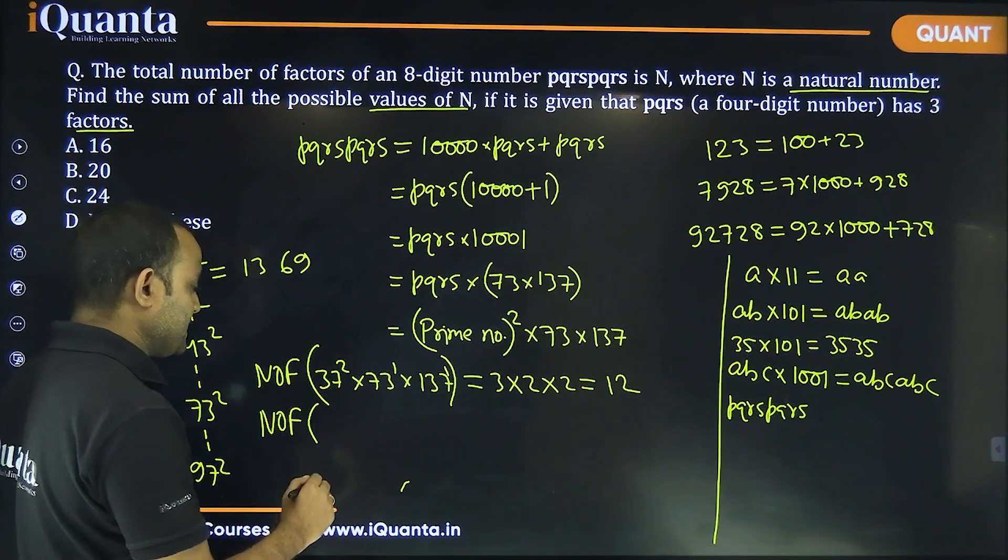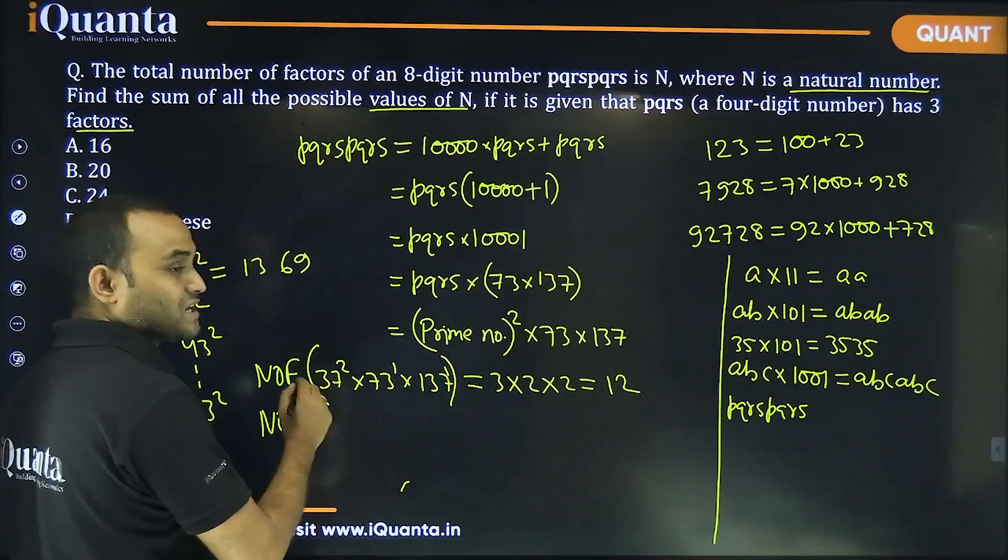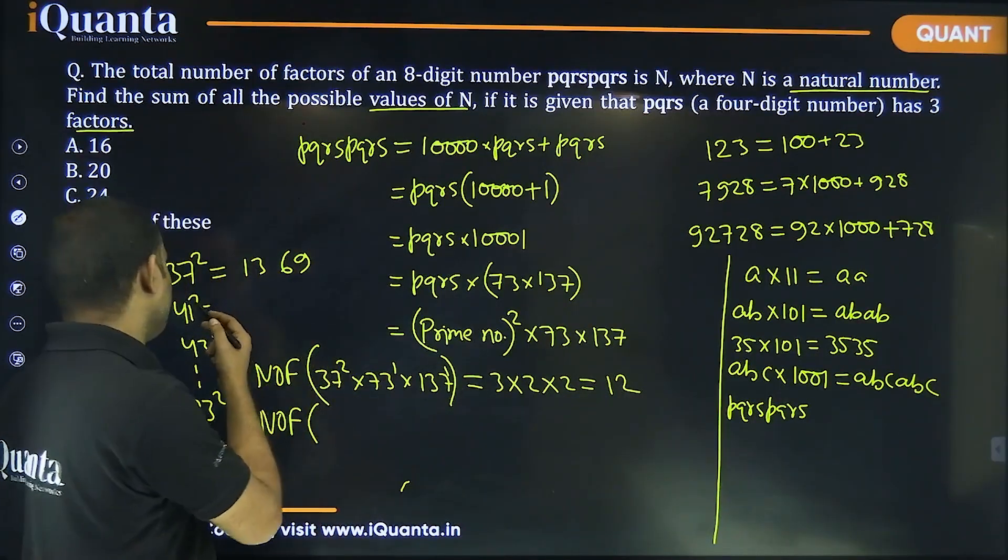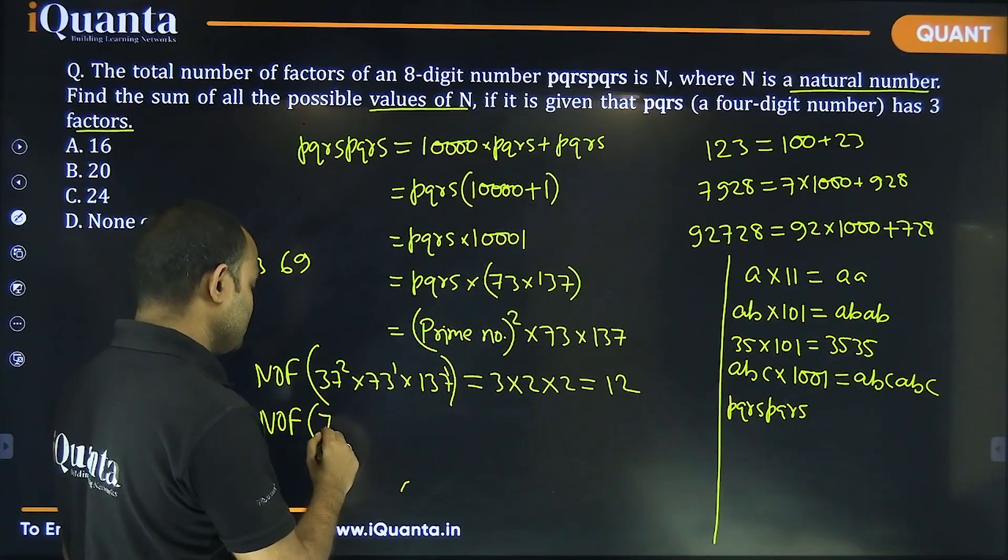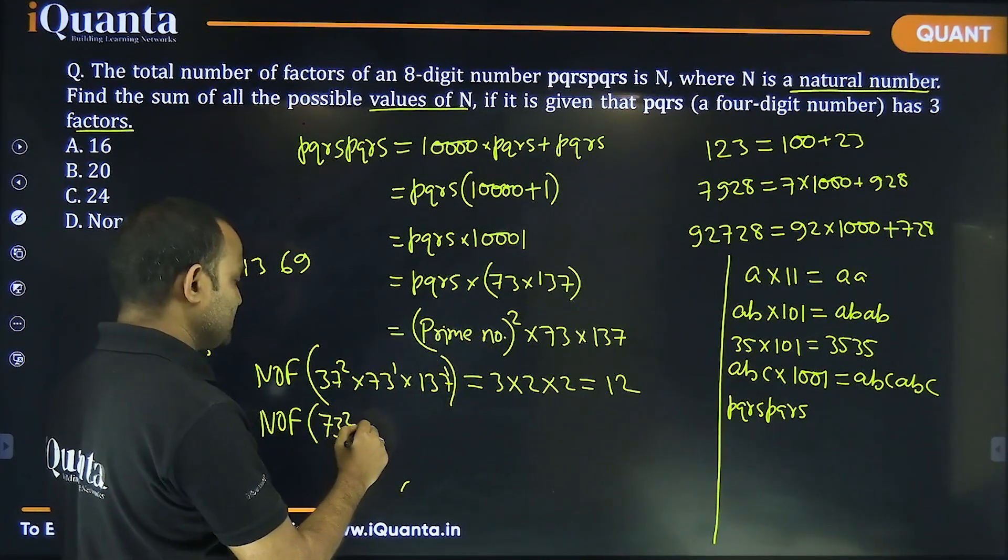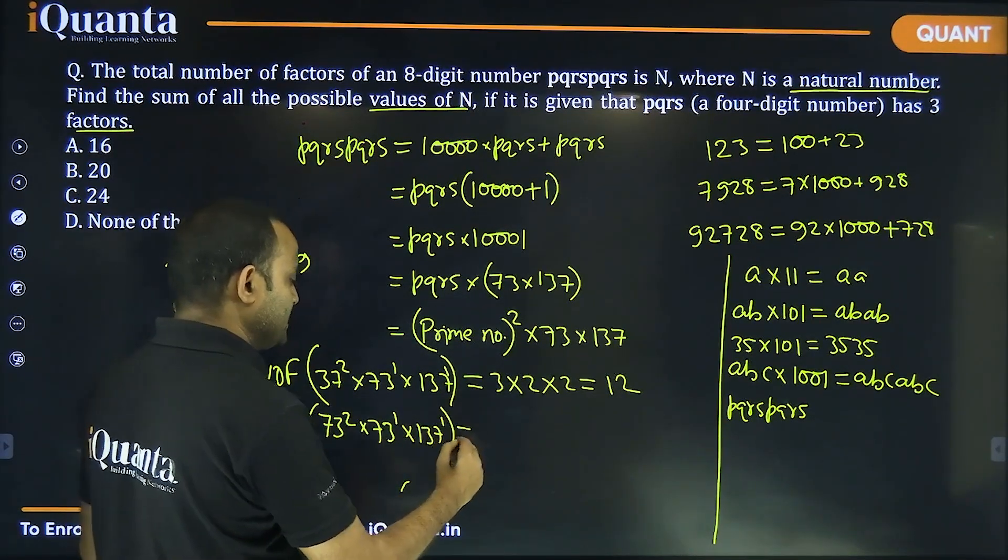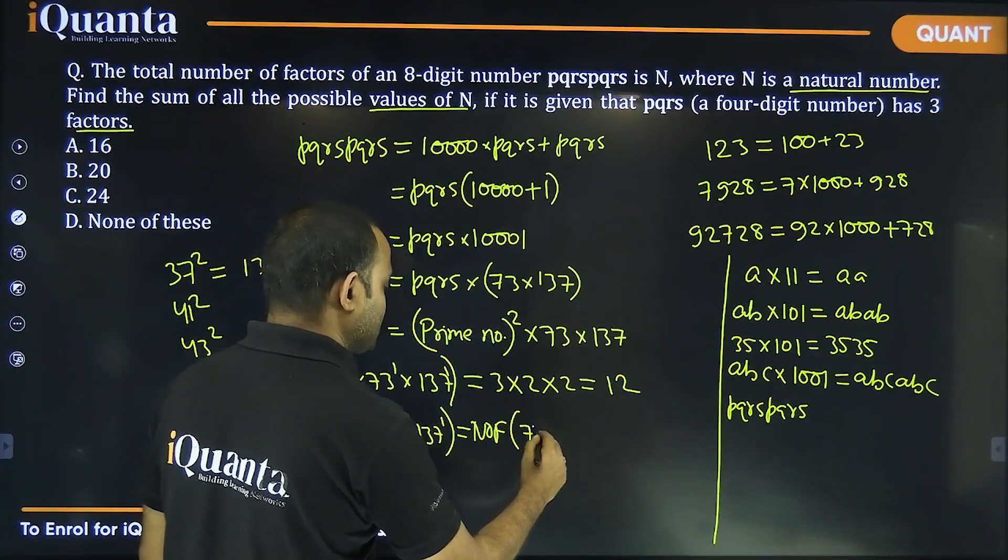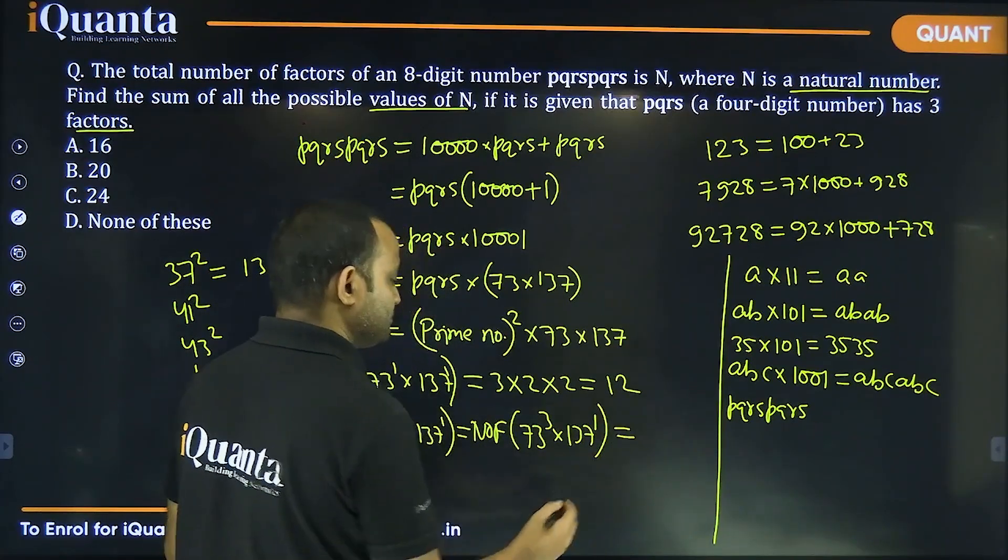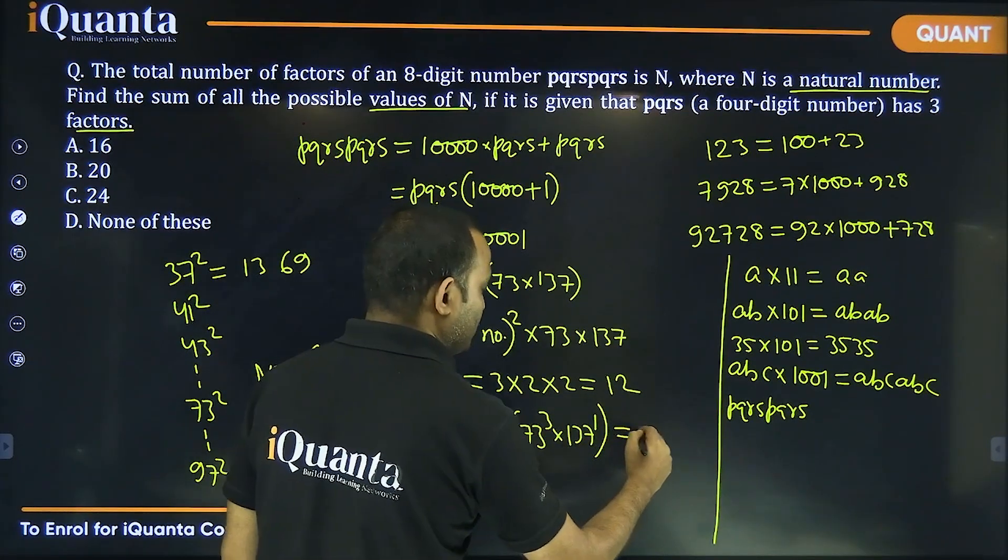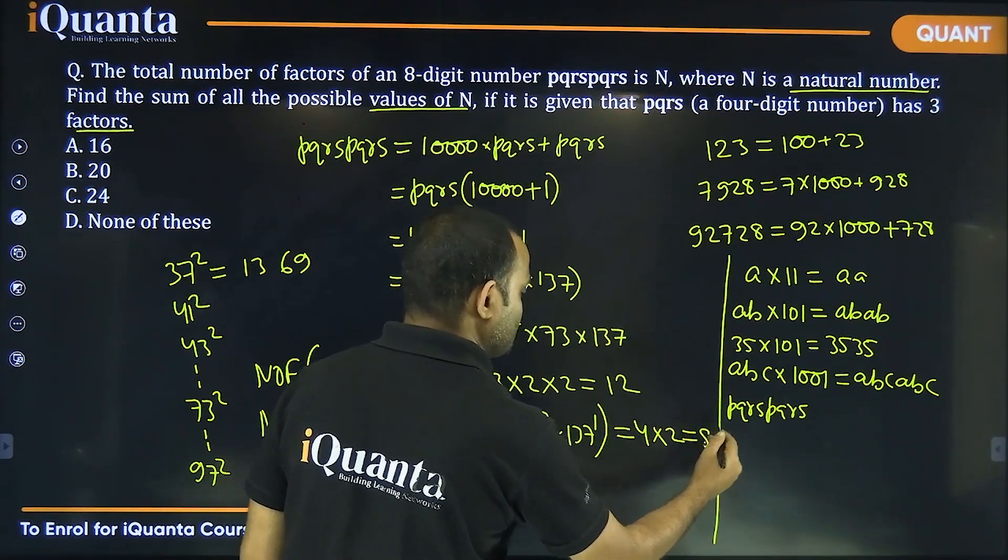Now, can we take 73 as the other prime number? Instead of 37, it could be any prime number 41, 43, 97, it will have the same number of factors. But if I take this PQRS as 73 square, then what will happen? Then we need to find number of factors of 73 to the power 3 into 137 to the power 1. Now, 73 to the power 3, number of factors is 4 and 137 to the power 1, number of factors is 2. So, total 8 factors.